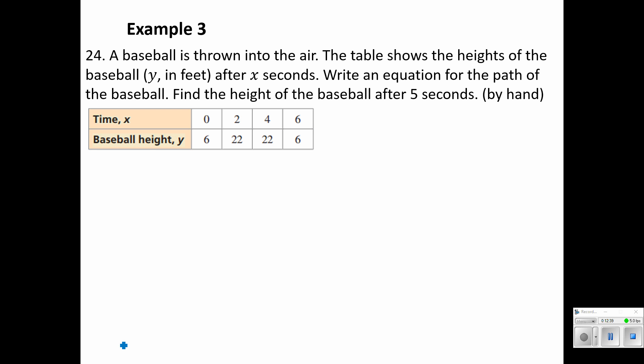Example 3. This is going to be the long one. So you may want to write small in your note packet or in your notebook if you're following along. A baseball is thrown into the air. The table shows the heights of the baseball, that's our y-axis in feet, after x seconds have gone by. Write an equation for the path of the baseball. Find the height of the baseball after five seconds. Well, this is a problem that we are told to do by hand. That means that in order to verify that it is, in fact, a quadratic function, we would need equally spaced x values. And you can see that, yes, there's a difference of two each time.